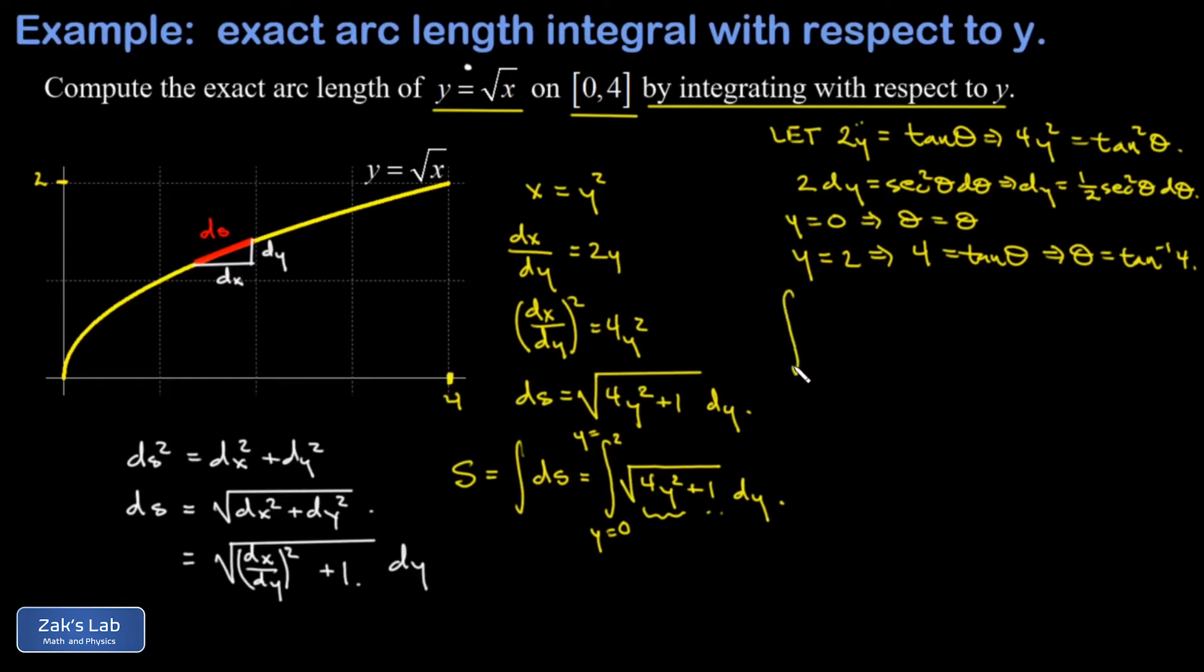So now our entire integral has been transformed in terms of theta. I have the integral from 0 to inverse tangent of 4. And then inside my square root, 4y squared is just tangent squared. So I have a tangent squared theta plus 1. And then the differential dy transforms to one half secant squared theta times d theta. I'm going to move the one half out in front. Then in my square root, 1 plus tangent squared is secant squared. But when I square root that, I get the secant function. So that secant multiplied by the secant squared that's already there gives me a notorious integral, this integral of secant cubed theta d theta.